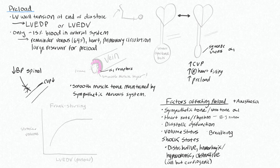The Frank-Starling curve shows you the stroke volume that you get for any given left ventricular end-diastolic volume. With very low left ventricular end-diastolic volume you get very low stroke volume, which makes sense. At the other extreme, where you have high left ventricular end-diastolic volume, you'll have high stroke volume. There is a flat part of the curve where increasing your preload does not actually increase your stroke volume — this is your area where you're not fluid responsive.